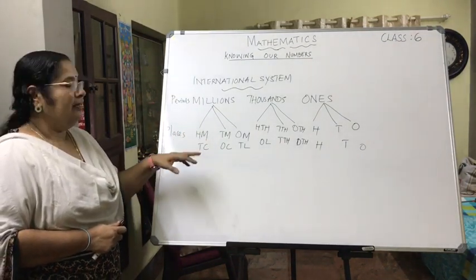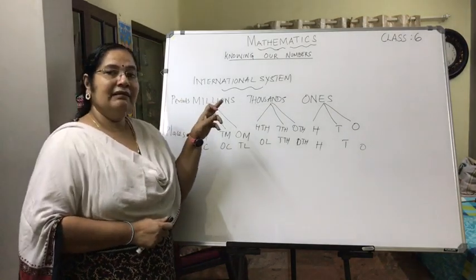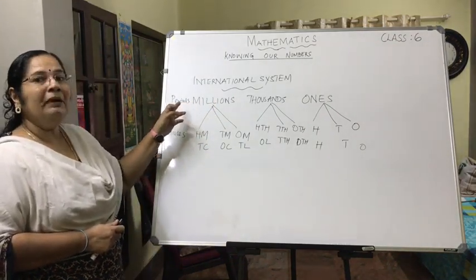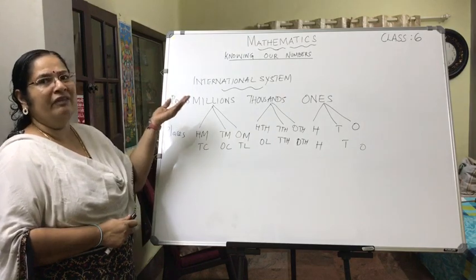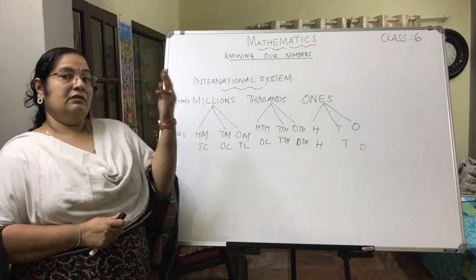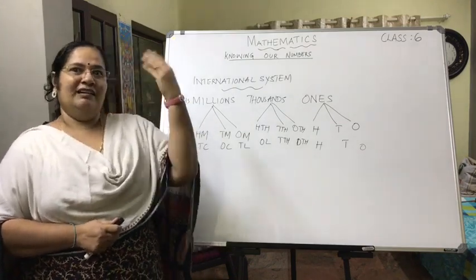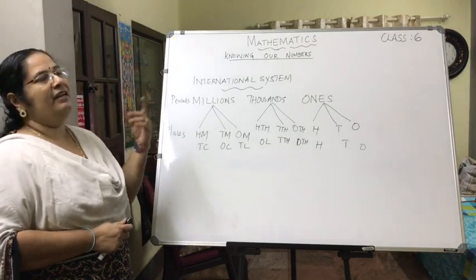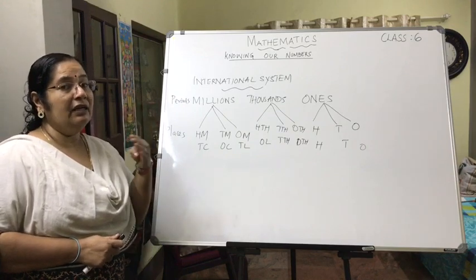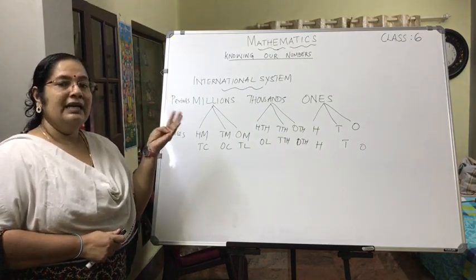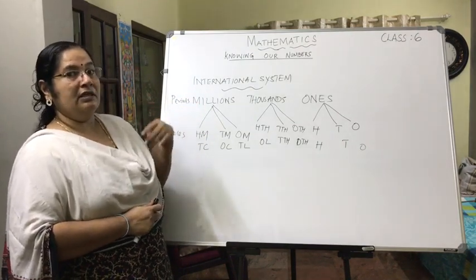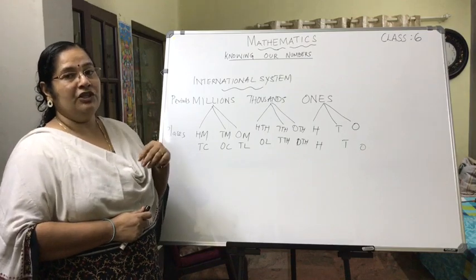So we have three periods and nine places. Up to thousands we use everywhere; now it is millions. When somebody tells you 36 million dollars, you have an idea it is somewhere near our lakhs or crores. When we learn the numeral and number name, you will be able to clearly identify how much 36 million is in our Indian system.